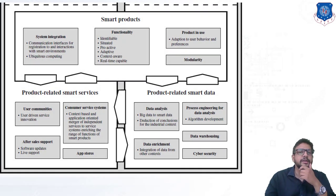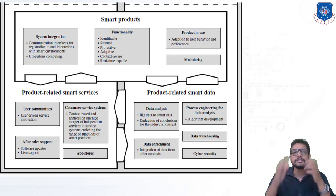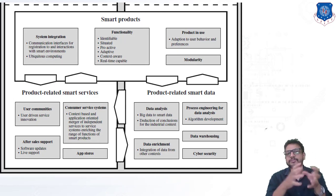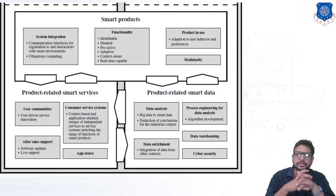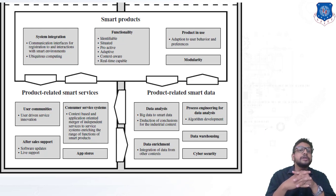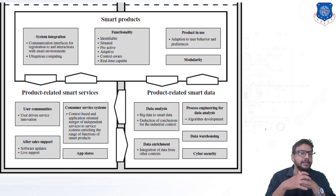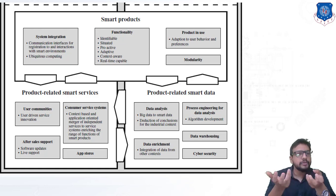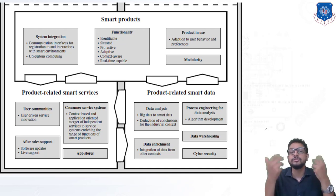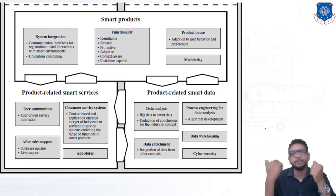Now, what is a smart product? Whatever result is obtained by using smart data and smart services within a smart factory will definitely result in a smart product. It is a continuous process of optimizing, visualizing defects, and modifying as per customer requirements to achieve the most feasible and optimal product. Under smart product, we have system integration, functionality, product in use, and modularity. System integration includes the communication interface for interaction with smart environments, ubiquitous computing — including identifiable, situated, proactive, adaptive, context-aware, and lifetime capabilities.